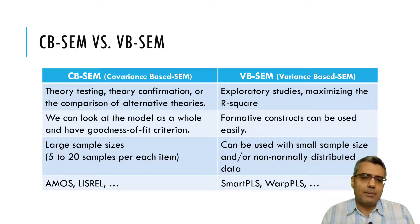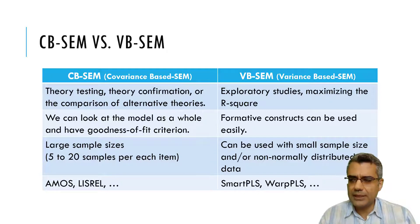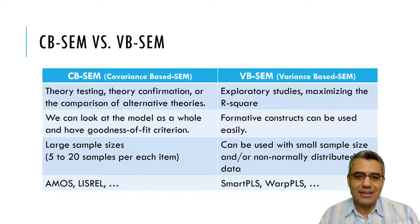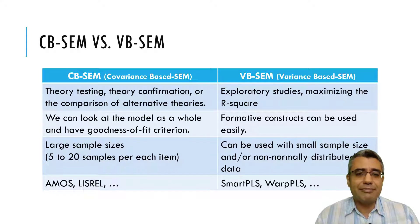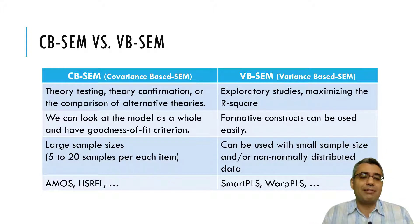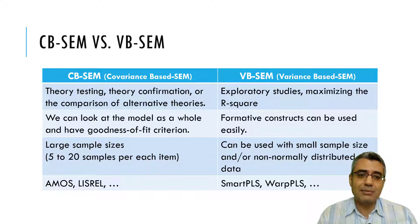One of the main advantages of CBSEM compared with VBSEM is the model fit indexes. In VBSEM there are also some model fit indexes, but there is no universal agreement on the benefits of PLS or VBSEM model fit indexes. So this is one of the biggest advantages of CBSEM. However, when you have formative constructs, you should use PLS or VBSEM. In that case, I do not suggest using CBSEM — this is one of the advantages of VBSEM or PLSSEM compared with CBSEM.